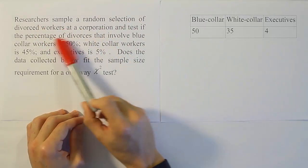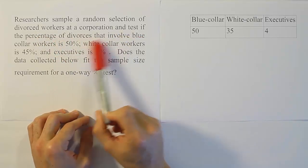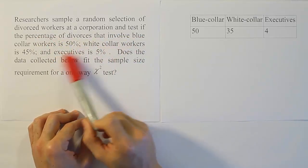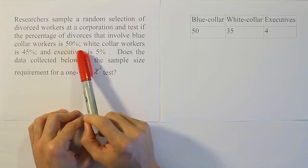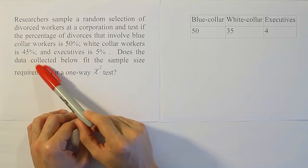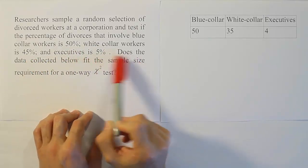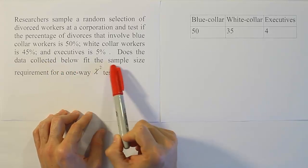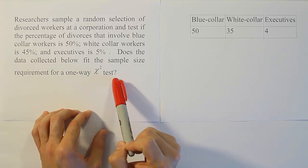Researchers sample a random selection of divorced workers at a corporation and test if the percentage of divorces that involve blue-collar workers is 50%, white-collar workers is 45%, and executives is 5%. Does the data collected below fit the sample size requirement for a one-way chi-squared test?